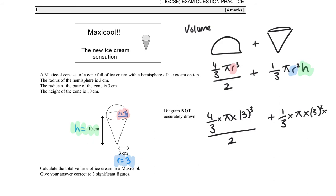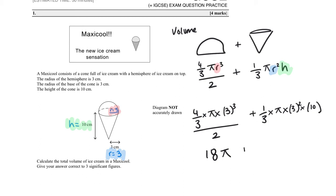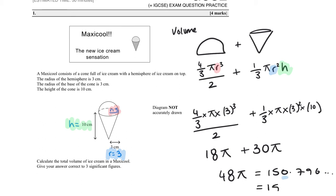Substituting in: (4/3 × π × 3³) / 2 + (1/3 × π × 3² × 10). Always substitute using brackets — this really helps when we move to harder algebraic questions. This gives 18π + 30π = 48π. The question asks for 3 significant figures, so 48π ≈ 150.796..., which rounds to 151 cm³.